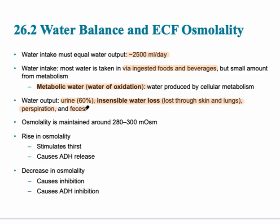Osmolality should stay within a certain range — around 280 to 300 milliosmols, which was the approximate osmolality of the PCT and the DCT. When there's a rise in osmolality — a hypertonic situation — the body needs to return to homeostasis. It does this by first stimulating the thirst center in the hypothalamus, and also causing ADH release, which prevents water from leaving the body in urine and reabsorbs it into the bloodstream. A decrease in osmolality does the opposite: it inhibits the thirst center and causes ADH inhibition, getting rid of extra water.